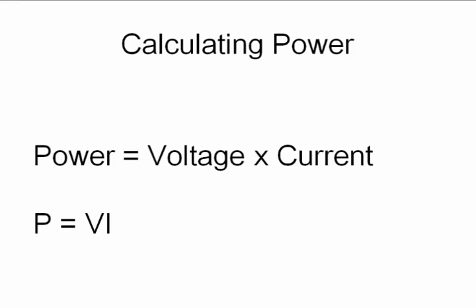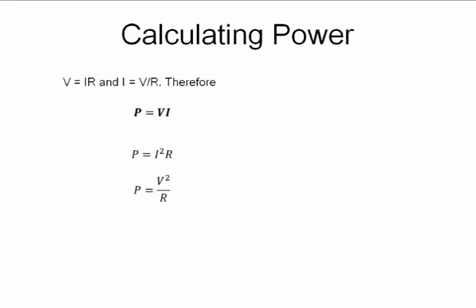Now single phase power or DC power. DC power or single phase power is calculated by voltage into current. With AC systems you have power factor which we will look at later. So don't worry for now. With DC power, power is V into I.